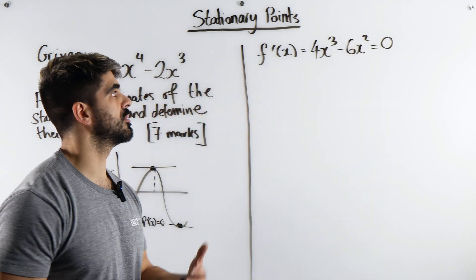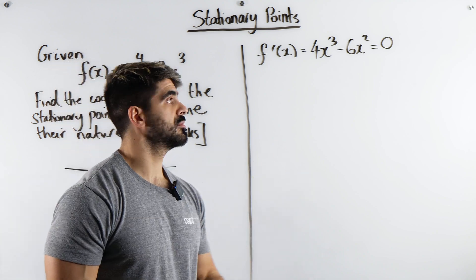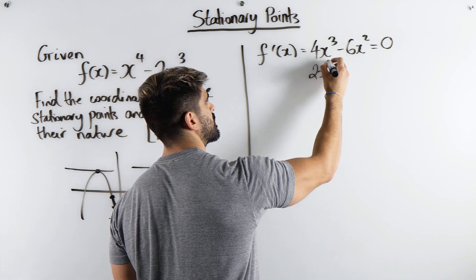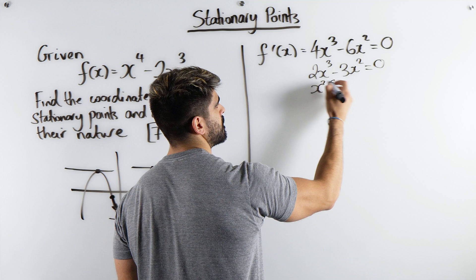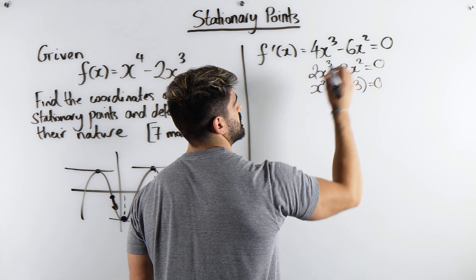Now we make that equal to 0. We're going to solve that. I'm going to factorize out x squared, but also I'm going to divide through by 2. So I'm going to do that first. So I get 2x cubed minus 3x squared is 0. Factorize out x squared. I'm going to get 2x minus 3 is 0.